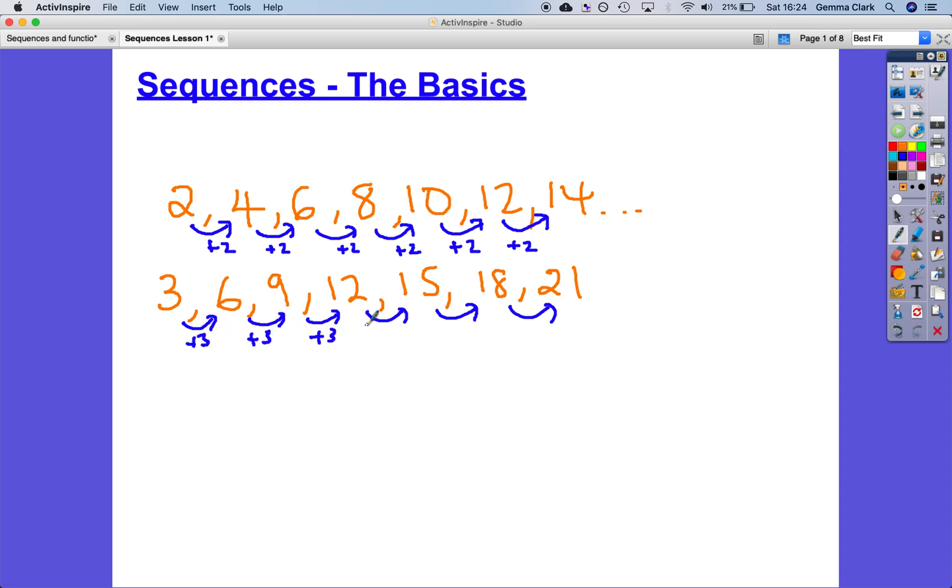Now we don't always have to start at, if it's the two times table at two or three times table at three, we could start at any number. We could start at I don't know fifteen, we could be adding four on as the term to term rule. So if I add on four as my term to term rule.